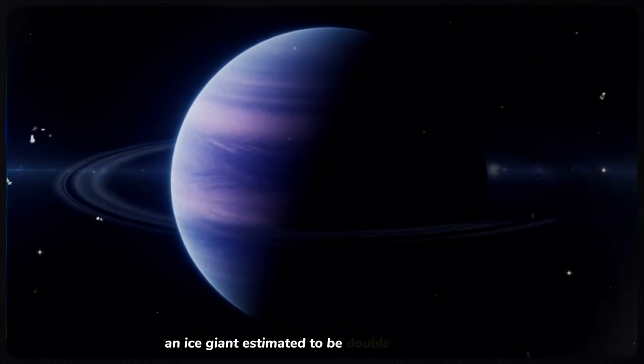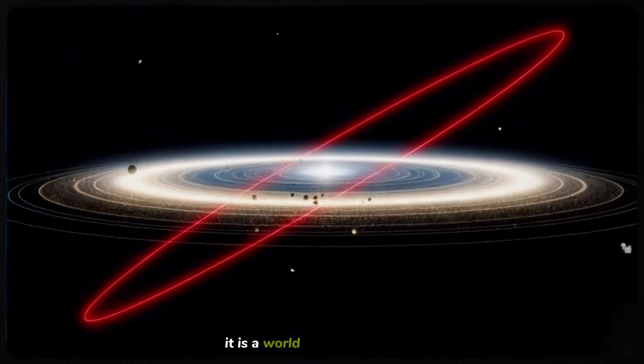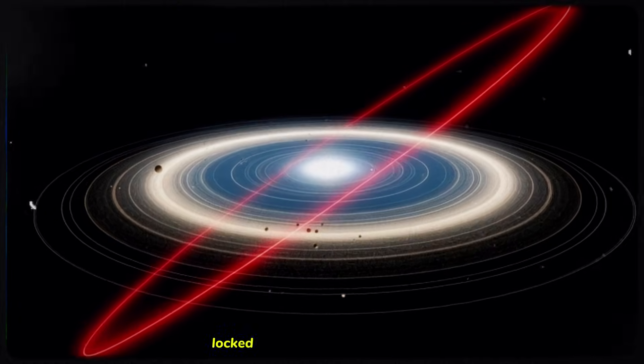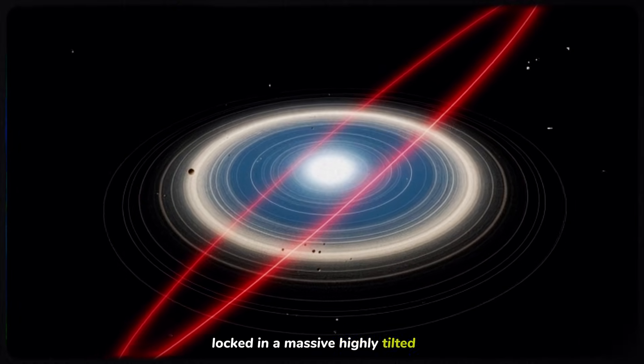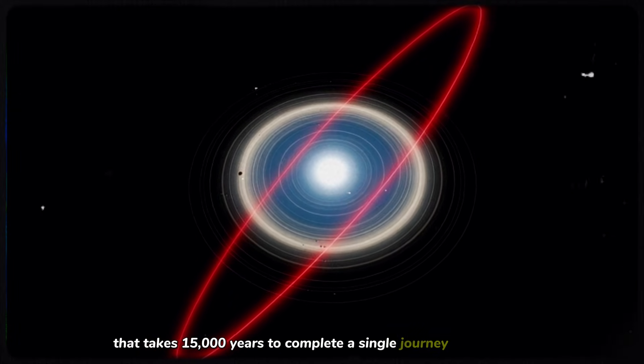An ice giant estimated to be double the size of Earth and perhaps ten times its mass. It is a world of absolute darkness, locked in a massive, highly tilted orbit that takes 15,000 years to complete a single journey around the sun.